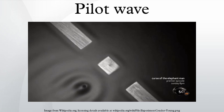Later, in 1932, John von Neumann published a paper claiming to prove that all hidden variable theories were impossible.